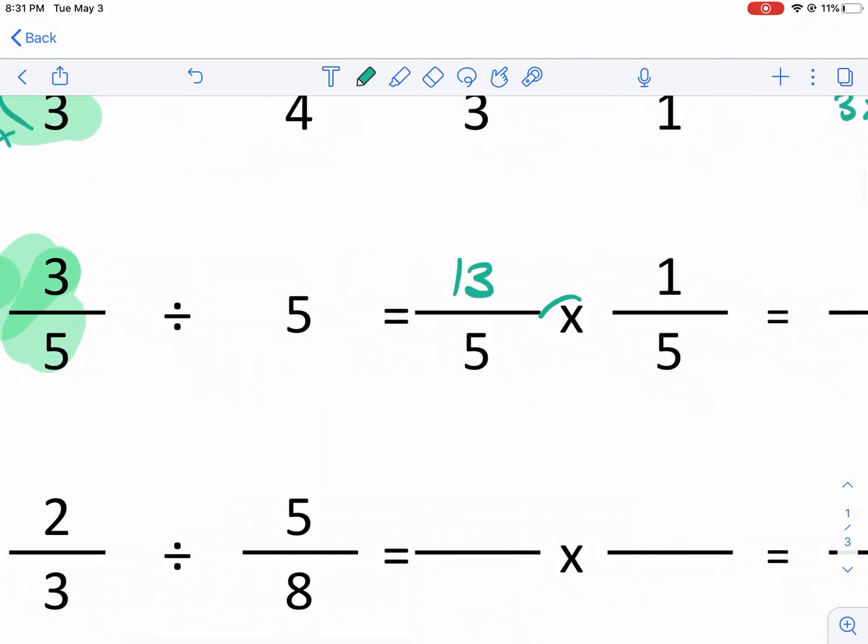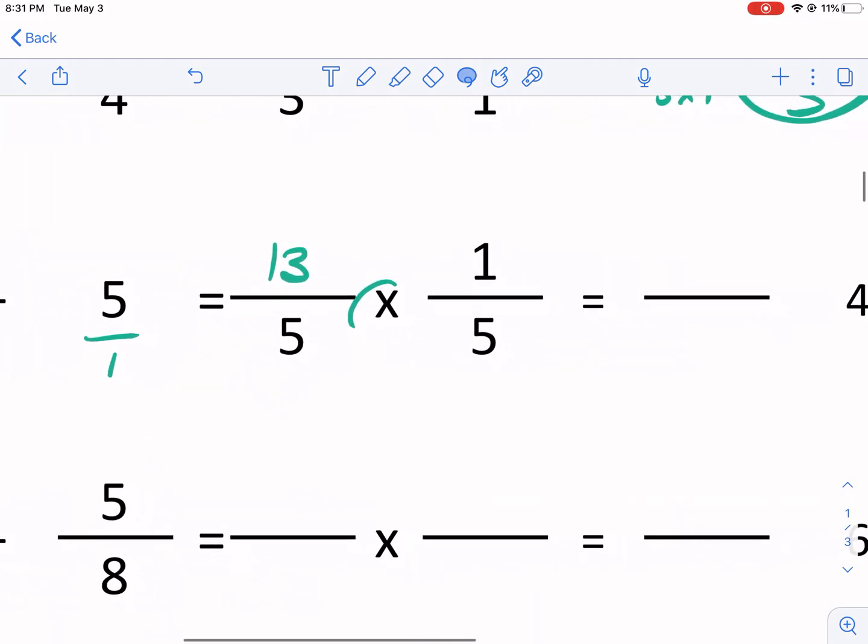And then we already have the change and flip. So that is going to be one over five. Why is it one over five? Because if we have five over one, that's the same thing as five. That's the same thing as five. So five over one, that's five. So the reciprocal would be one over five.